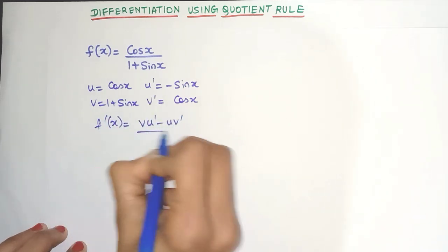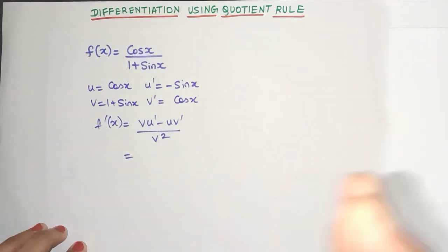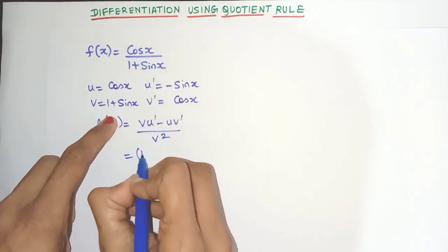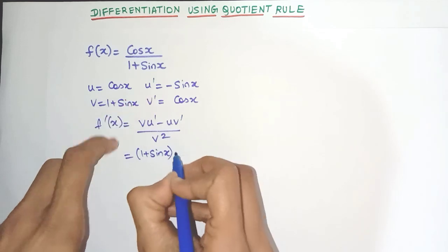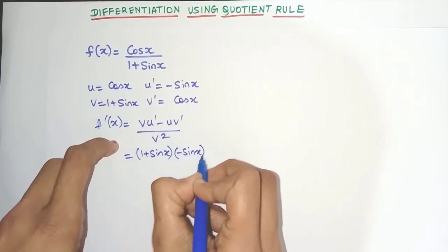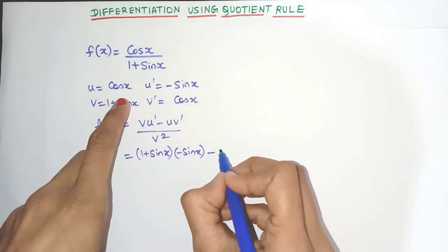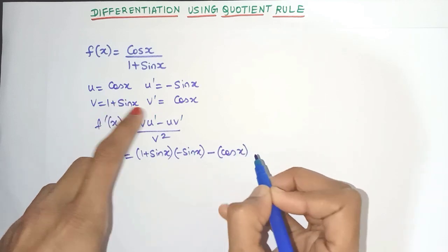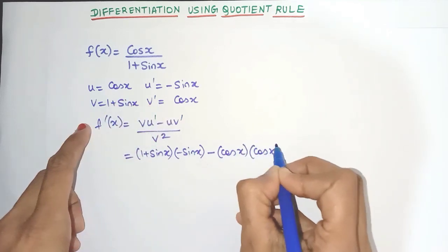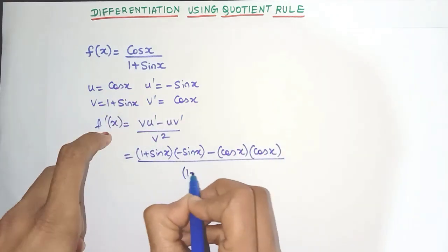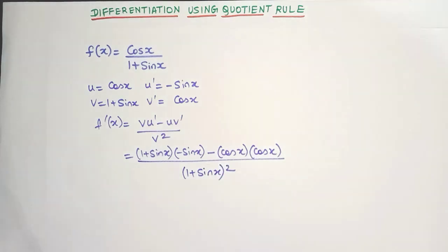And now substitute. So we'll get v as 1 plus sin x into derivative of u is minus sin x minus. Now u is cos x and derivative of v is cos x divided by the denominator square. That's it. This is the derivative but I think quite a lot of simplification is possible.